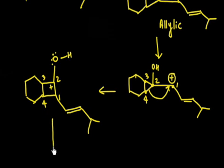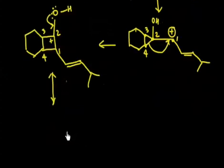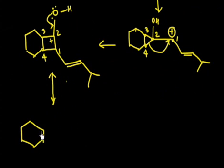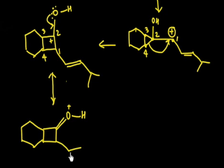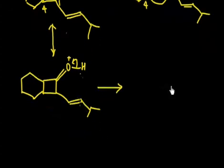You can write a resonating structure of this molecule by donating the lone pair of oxygen. So you can write a resonating structure, and in the next step you simply lose H+ — that is the easy part.